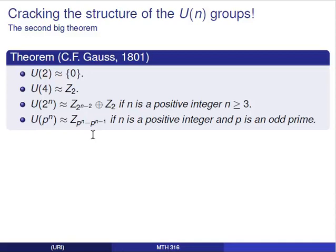If you're interested, you might think about how to prove this and try to reconstruct Gauss's argument. One thing you'll notice right away is that the orders are correct: there is exactly one number less than 2 that's relatively prime to it; two numbers less than 4 that are relatively prime to it; 2^(n-1) elements less than 2^n that are relatively prime to it; and p^n - p^(n-1) numbers less than p^n that are relatively prime to it. So the orders are correct.